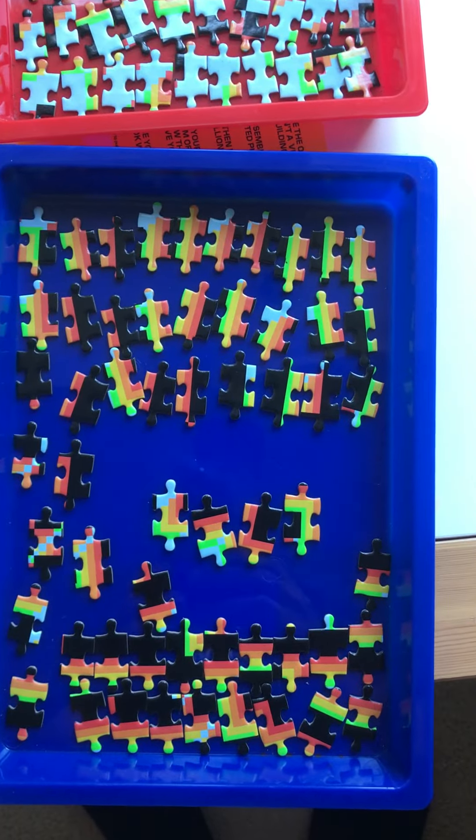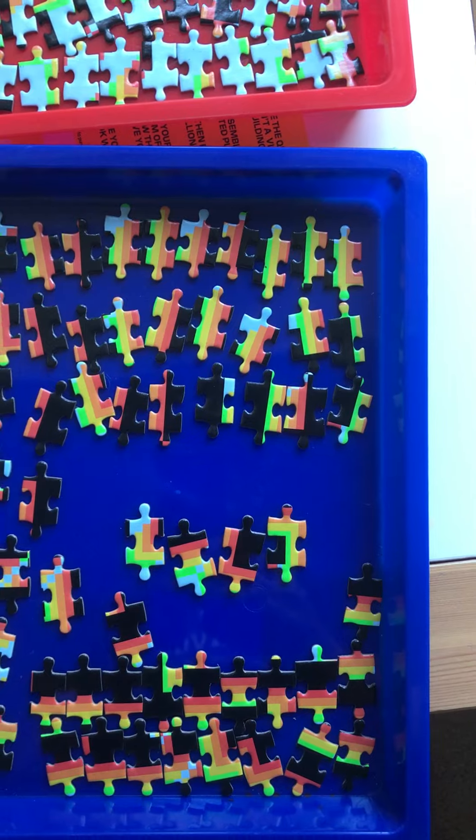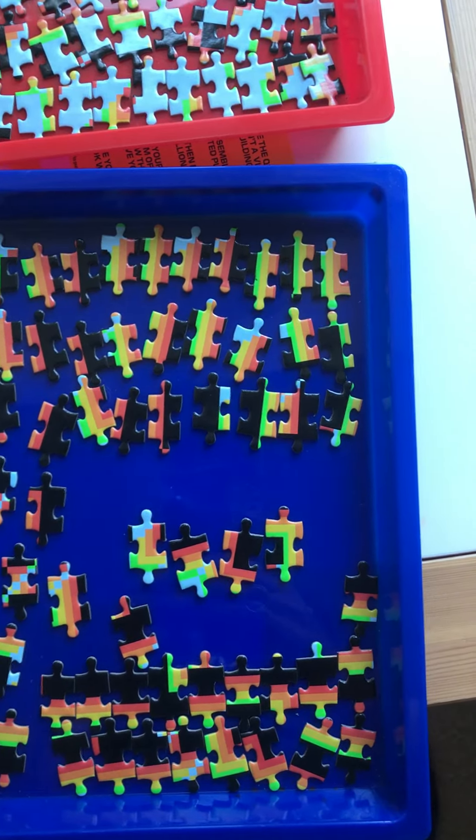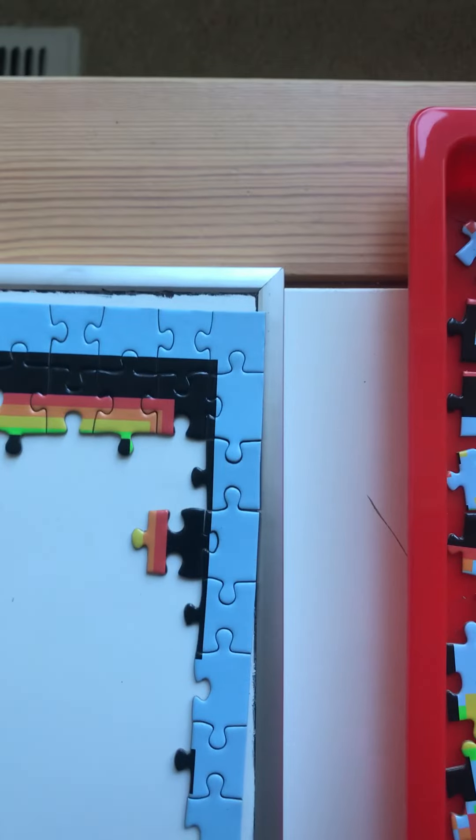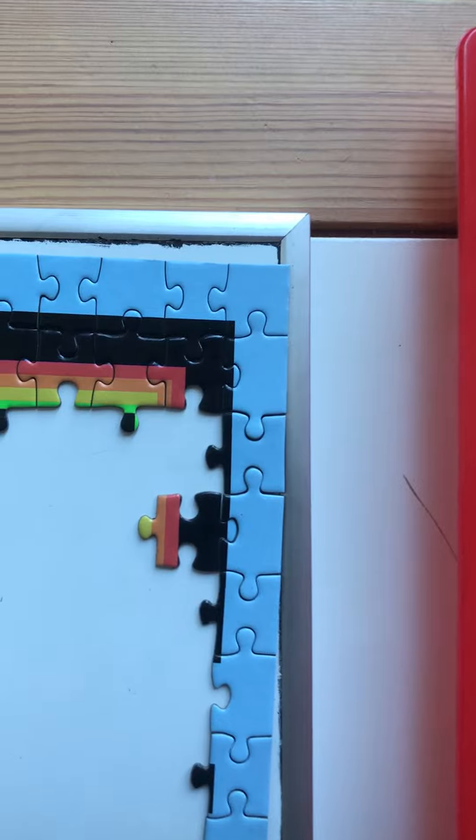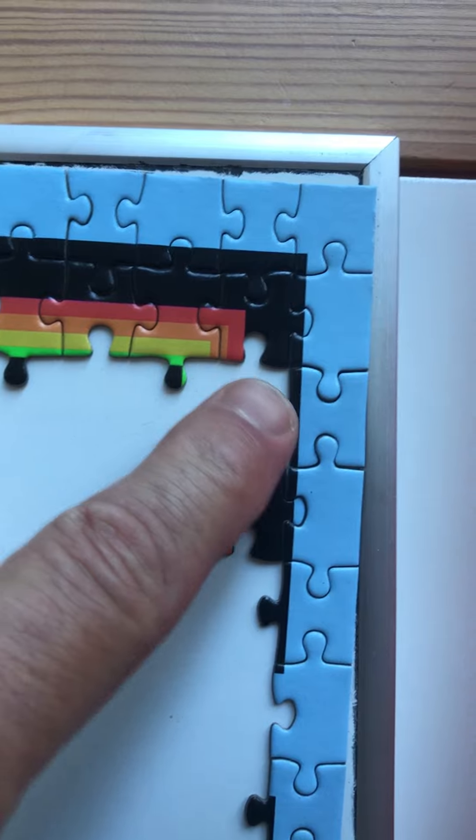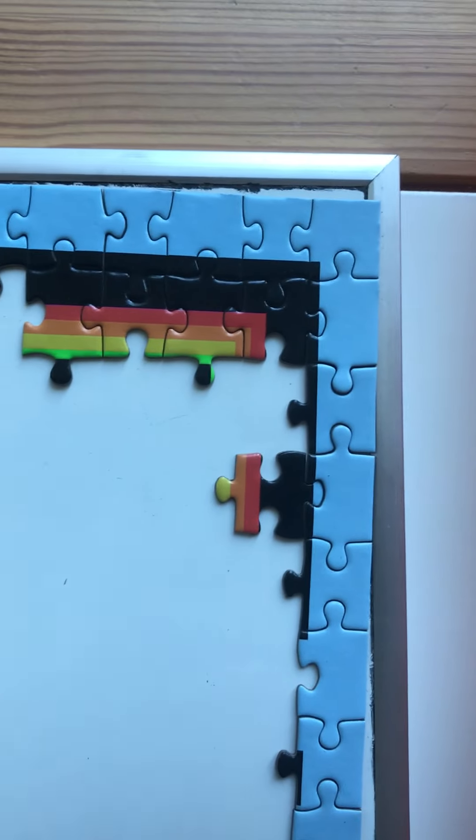Green is always on the left or on the bottom. How this helps is when I'm looking for a piece, for example, I'm looking for a piece that goes right in here, this piece right here.